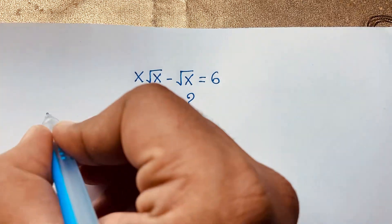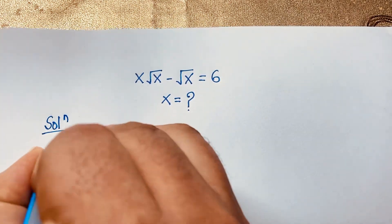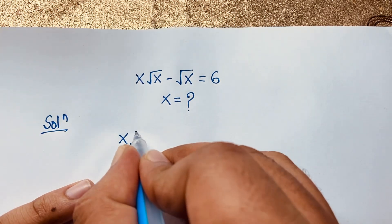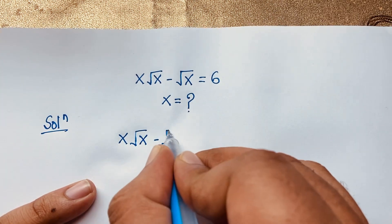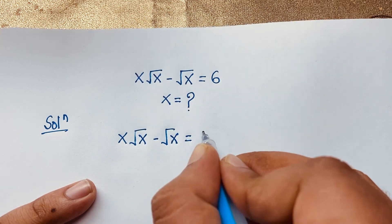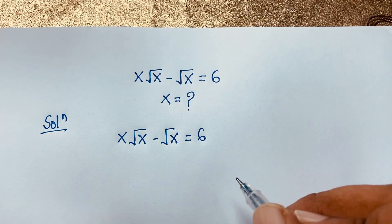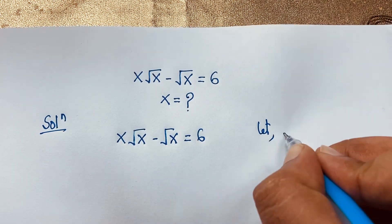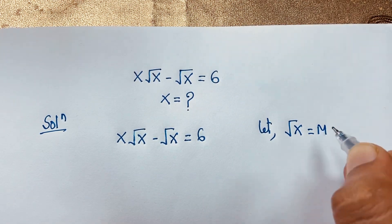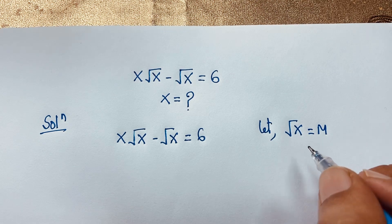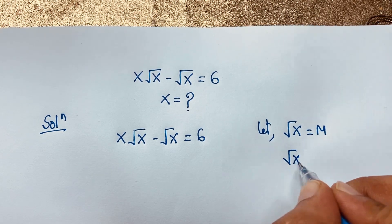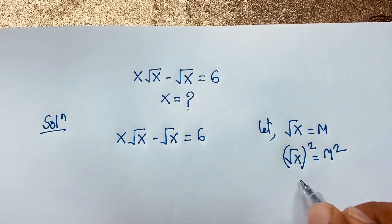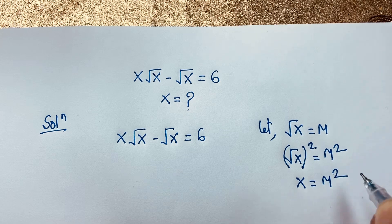Here is the solution. Our question is x·√x minus √x is equal to 6. At this moment, we let square root x equal to m. If we square both sides, the square root cancels, and we find x is equal to m squared.